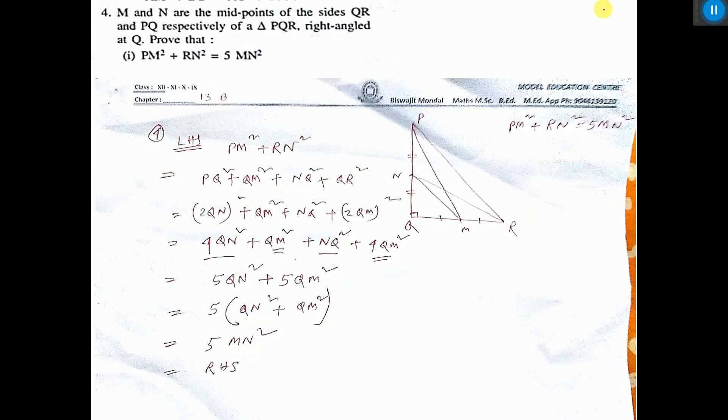Now, problem number 4. M and N are the midpoints of side QR and PQ of a triangle PQR. Here PQR triangle, M is the midpoint of QR and N is the midpoint of PQ. Then we have to prove that PM² + RN² = 5MN².